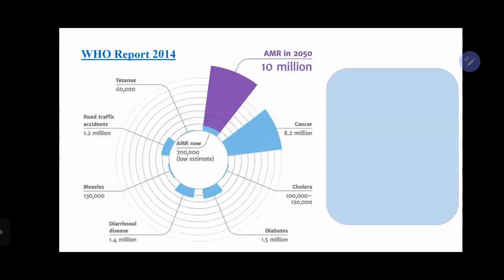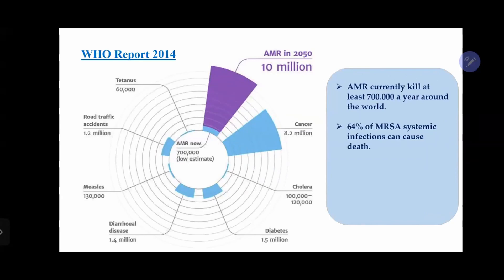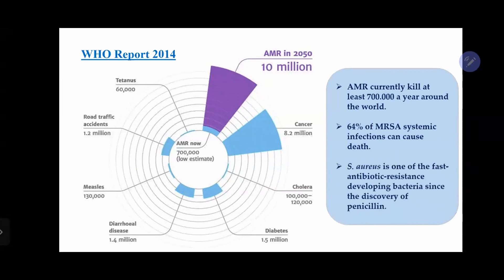Before I start talking about this work, I'd like to talk about the motivation. What we see here is a summary of the World Health Organization's report about antimicrobial resistance in 2014. According to the WHO, antimicrobial resistance currently kills at least 700,000 people around the world. About 64% of MRSA infections end up with death of the patient. Staphylococcus aureus is known as one of the first antibiotic-resistance-developing bacteria since the discovery of penicillin, methicillin, and lastly vancomycin. Antimicrobial resistance is expected to kill about 10 million people around the world by 2050.